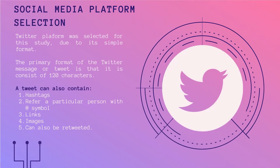Twitter platform was selected because of the simple format of its tweets, which can contain approximately 120 characters. A tweet can also contain hashtags, a particular person can be referred to with the @ symbol, links, images, and a tweet can also be re-shared.